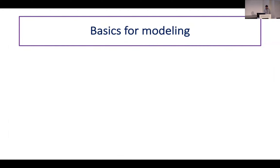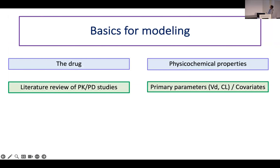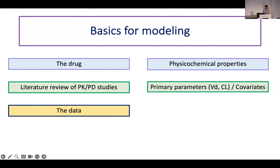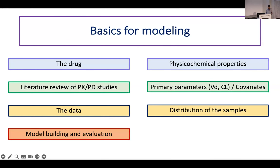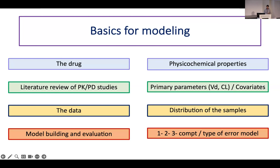To summarize: the first thing is obviously to focus on the drug and to have an idea of its physicochemical properties, because it will help you in the choice of clinically and biologically relevant data. Second step is a literature review to pick up studies on the same subject, especially to identify the best primary parameters and already-evaluated covariates. And as highlighted by previous speakers, the quality of the data is critical — I will come back to this point. After that, you can start model building using different compartment models and different error types.